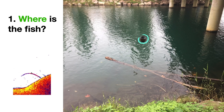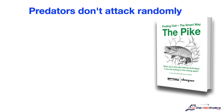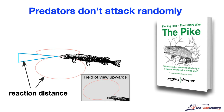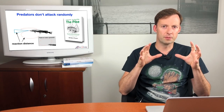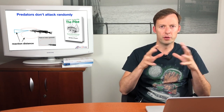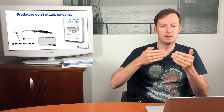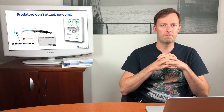The first thing we need to know is, fish do not hunt aimlessly. Predators like pike, pike perch and perch have an attack pattern or a hunting strategy. In the case of pikes, for example, they have a reaction distance, as learned from our book Finding Fish the Smart Way: the Pike. The pike is in its refuge and, depending on the sight, it pays a certain attention when the prey is at a given distance.